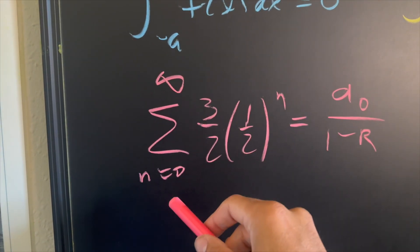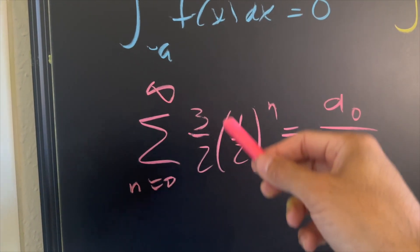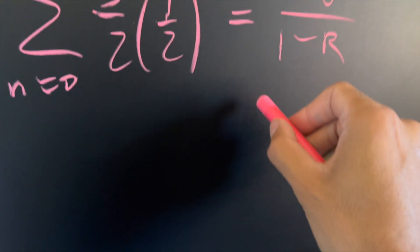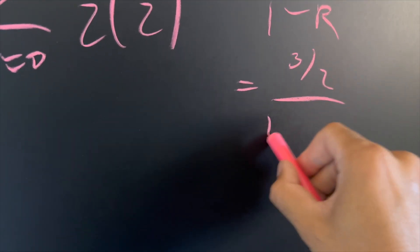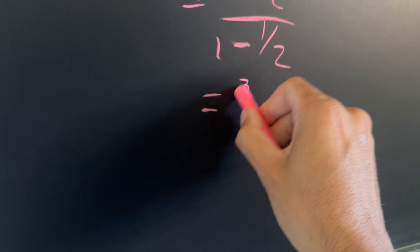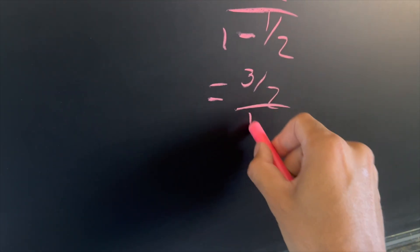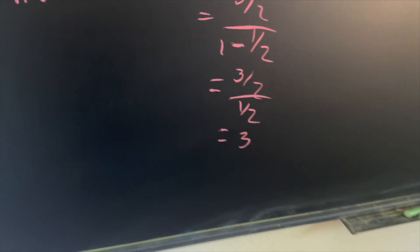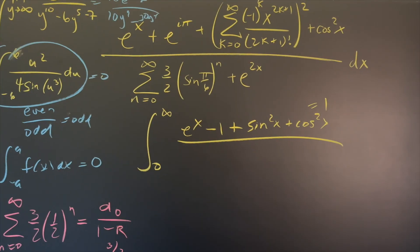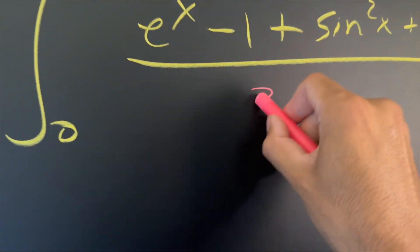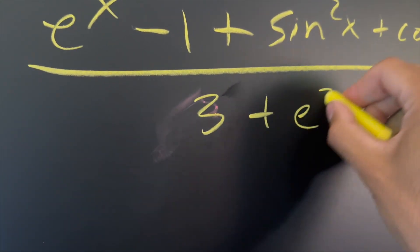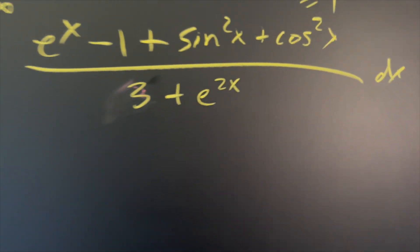Well, a of zero, if you were to plug in zero for the initial term here, you will have three halves times one half to the power of zero, which is just three halves. So we have three halves over one minus the common ratio, which is one half. You can simplify this as three halves over one half, which would just become three. So what we have here is we simply have three plus e to the two x.